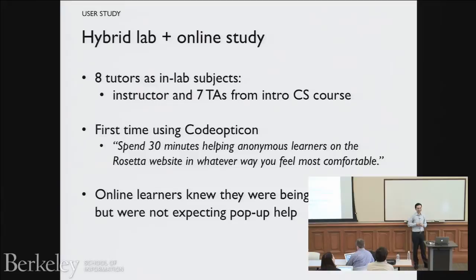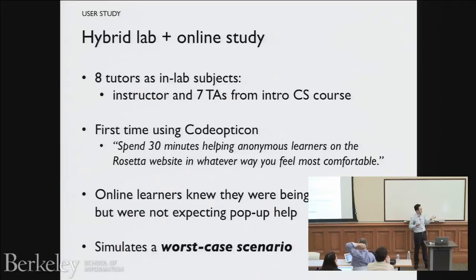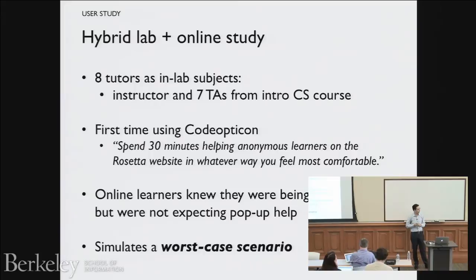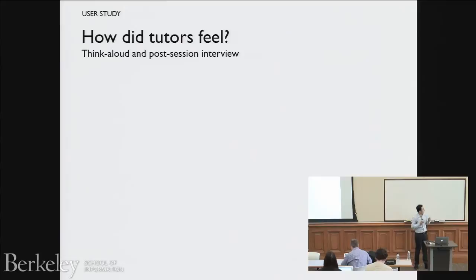Because the learners came from dozens of countries, they may not have spoken English either, so the results are probably on the lower end. This simulates a worst-case scenario — in a real deployment with a MOOC or online course, tutors would know how to use the system well and learners would sign up for the tutor's office hours knowing about the system. So how did they do even in this first-use scenario?